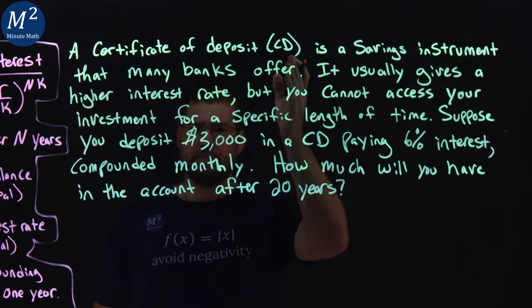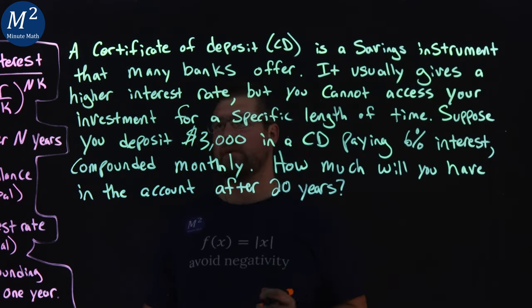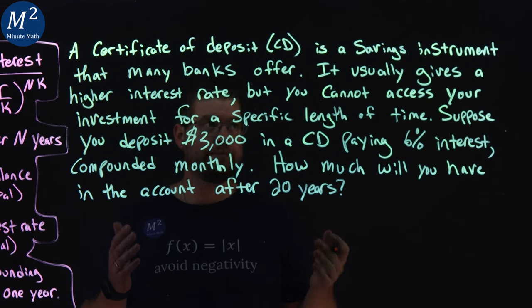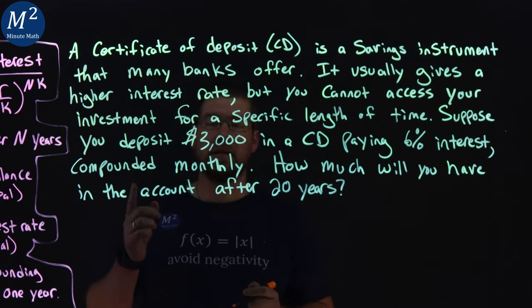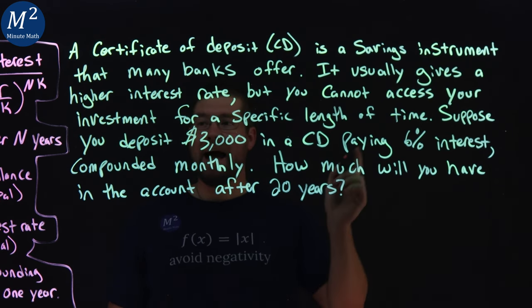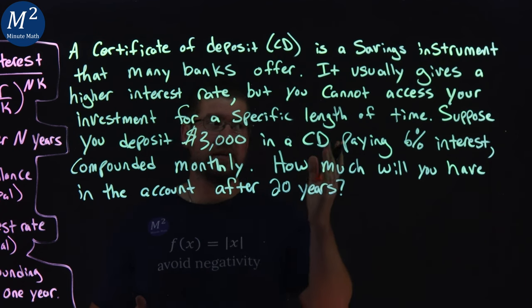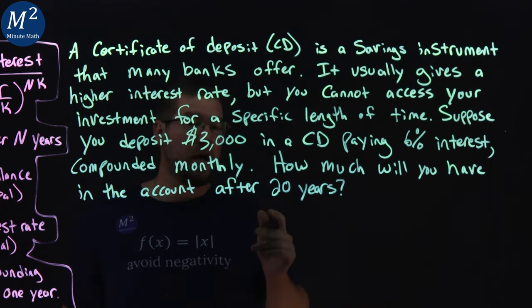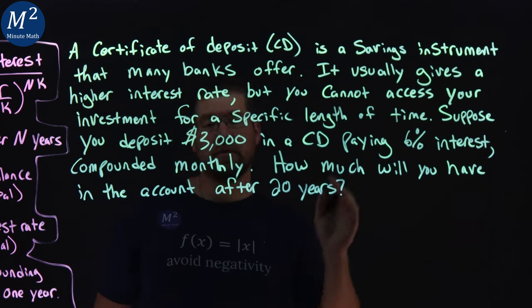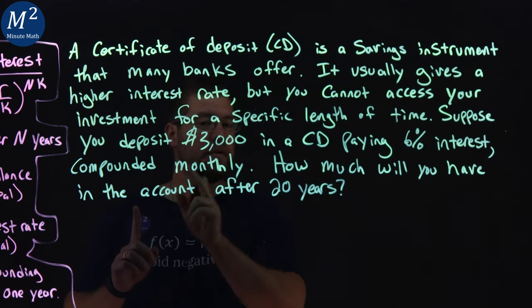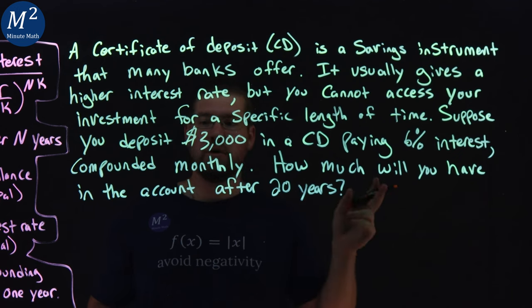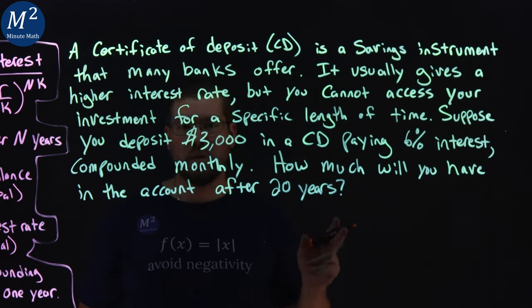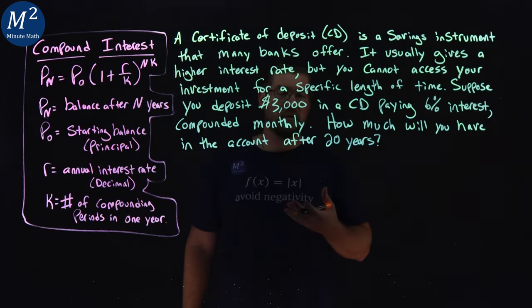A Certificate of Deposit, or CD, is a savings instrument that many banks offer. It usually gives a higher interest rate, but you cannot access your investment for a specific length of time. Suppose you deposit $3,000 in a CD paying 6% interest, compounded monthly. How much will you have in the account after 20 years? Let's learn.